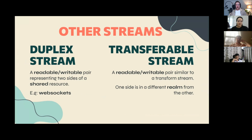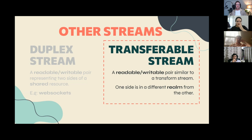Two less common but useful stream types: Duplex Streams have a readable and writable pair representing two sides of a single resource — WebSockets are an example, allowing simultaneous reading and writing. Transferable Streams also have a read-write pair, but one side is in a different realm than the other, making them useful for CPU-bound tasks.